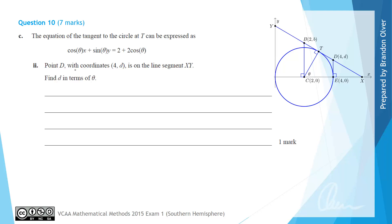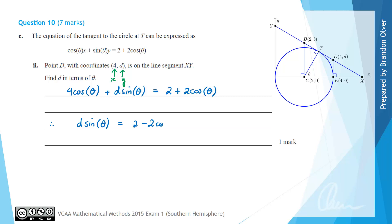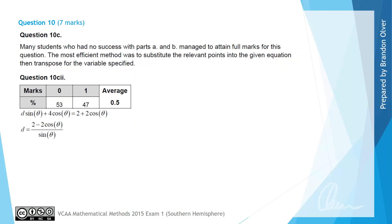For part two of part C, the point D with coordinates (4, D) is on the line segment XY, and we want to find D in terms of theta. Substituting x = 4 and y = D gives 4cos(θ) + D·sin(θ) = 2 + 2cos(θ). Subtracting 4cos(θ) from both sides gives D·sin(θ) = 2 minus 2cos(θ), so D = (2 − 2cos(θ)) divided by sin(θ). 47% of students got this part correct.